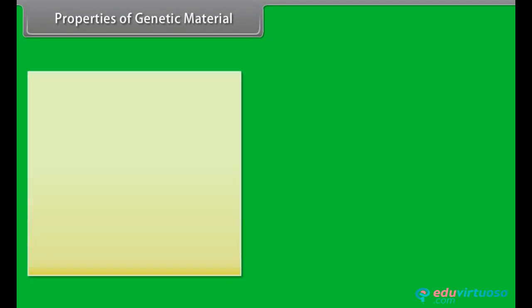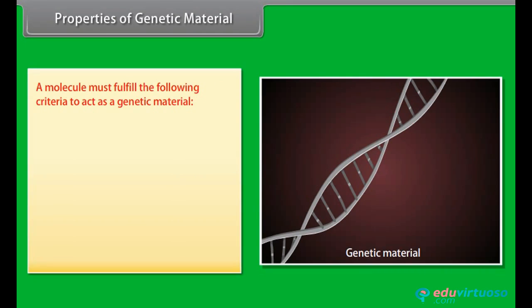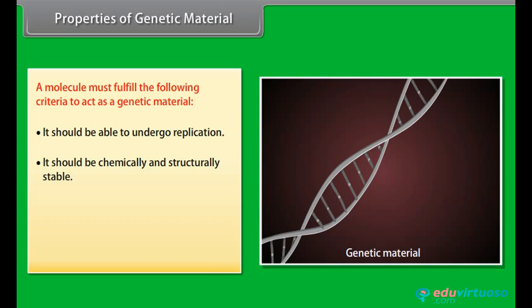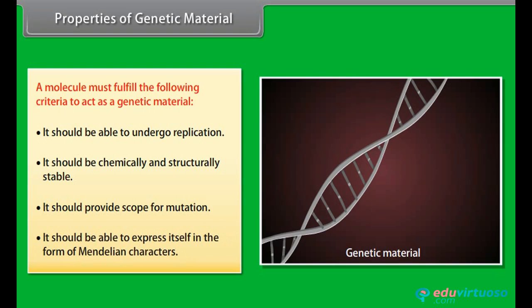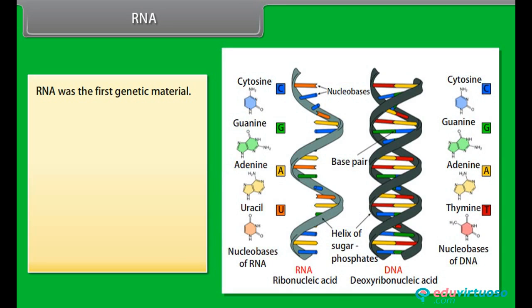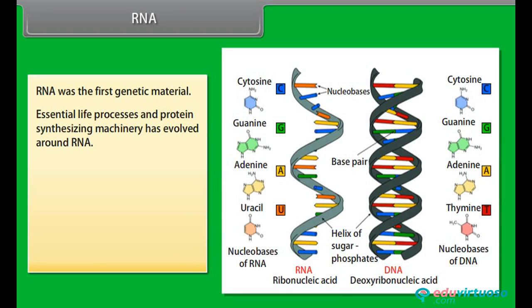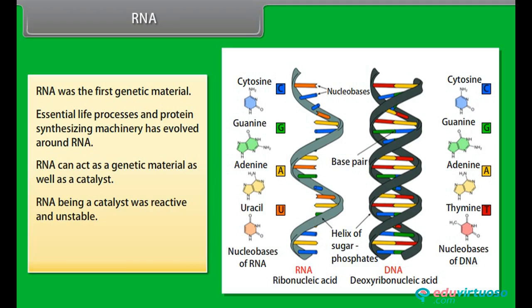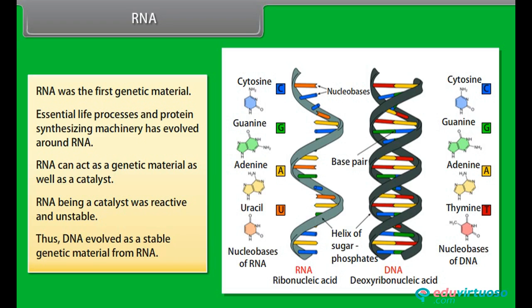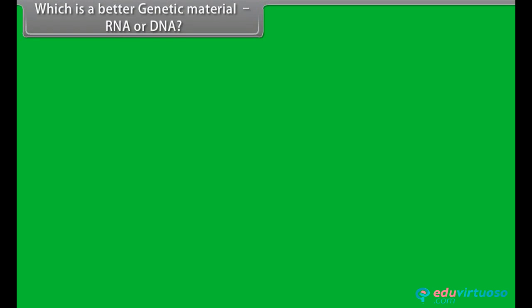Properties of genetic material. A molecule must fulfill the following criteria to act as a genetic material: it should be able to undergo replication, it should be chemically and structurally stable, it should provide scope for mutation, and it should be able to express itself in the form of Mendelian characters. RNA was the first genetic material. Essential life processes and the protein-synthesizing machinery evolved around RNA. RNA can act as a genetic material as well as a catalyst. However, being a catalyst, RNA was reactive and unstable, and so DNA evolved as a more stable genetic material from RNA.